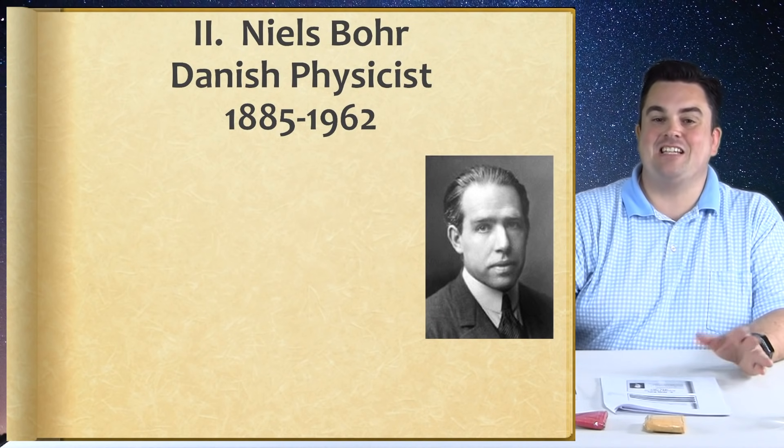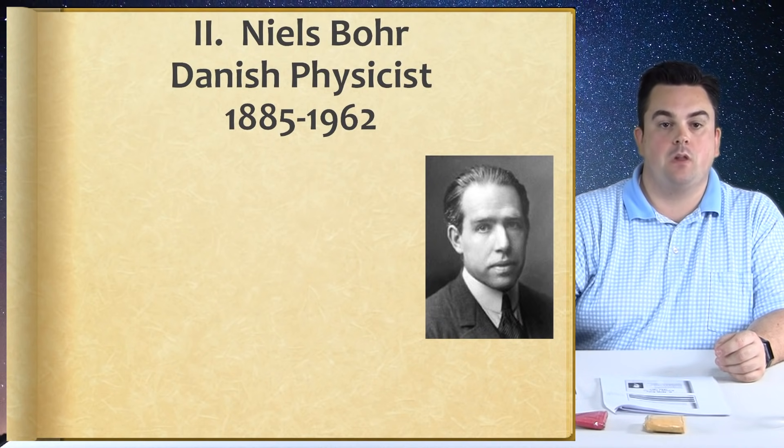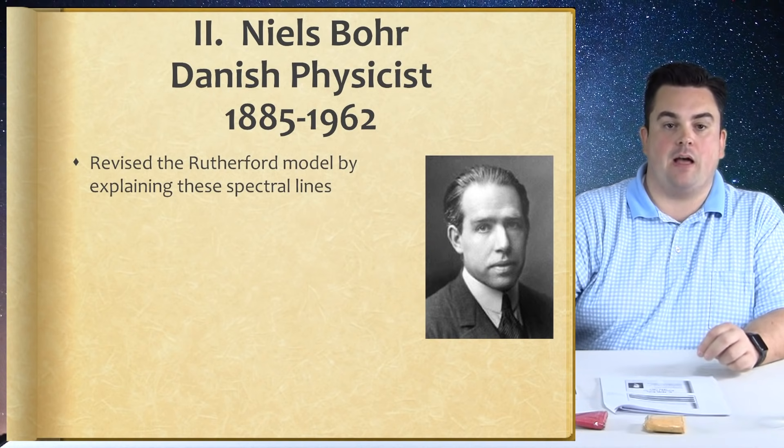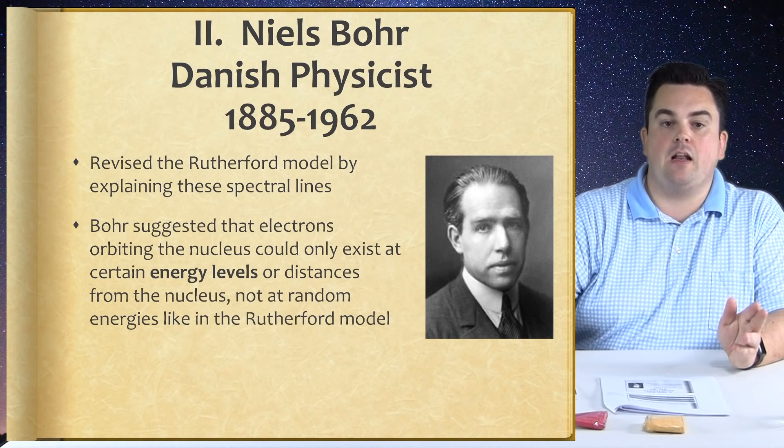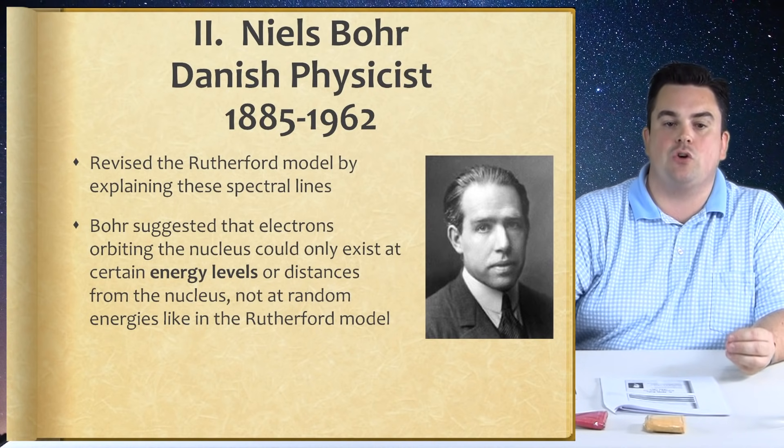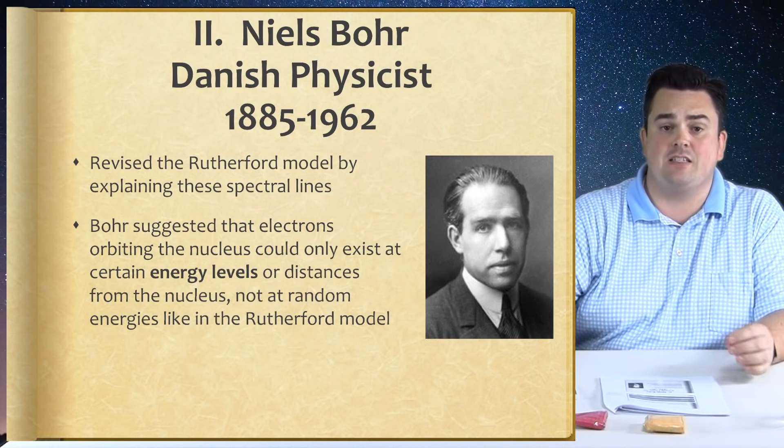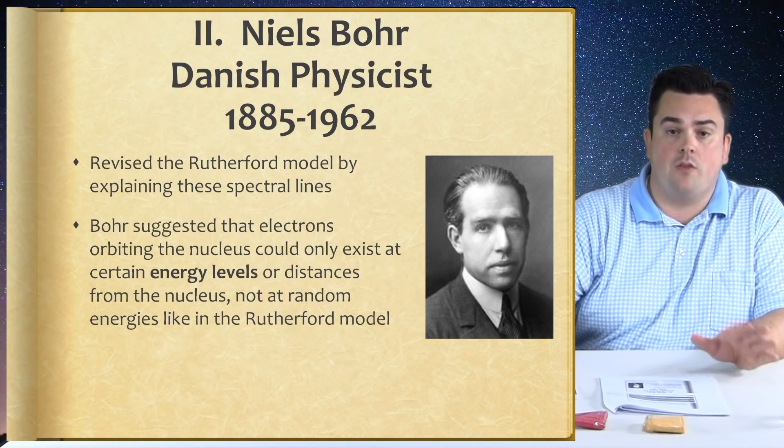Niels Bohr, Danish physicist, 1885 to 1962. Revised the Rutherford model by explaining these spectral lines. Bohr suggested that electrons orbiting the nucleus could only exist at certain energy levels, or distances from the nucleus, not at random energies in the Rutherford model.